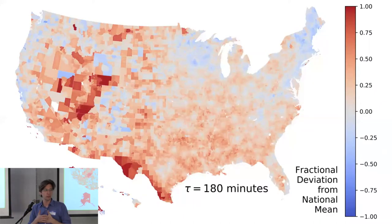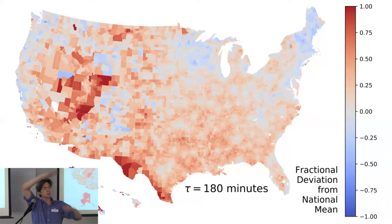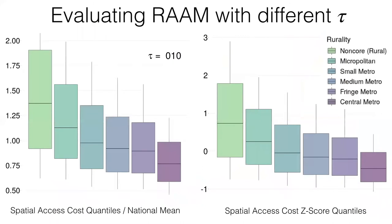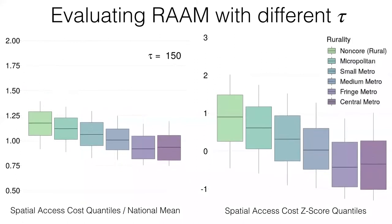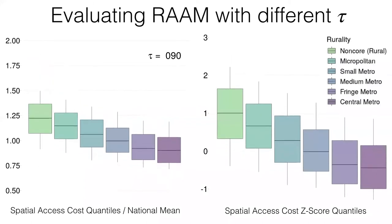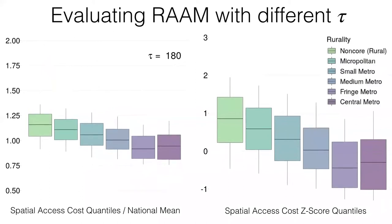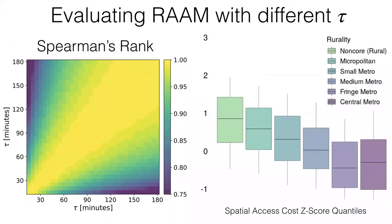As you run through different tau values, people willing to travel further accept less congestion, so everything converges toward the national mean — but things go from red to pink without really crossing. Looking at different rurality measures from rural to central metro, relative costs converge toward the national mean as tau varies, but the ordering remains consistent. The Spearman's rank correlation for tau from 10 minutes to three hours is above 90%, confirming that identifying places with low access doesn't depend much on the choice of tau.